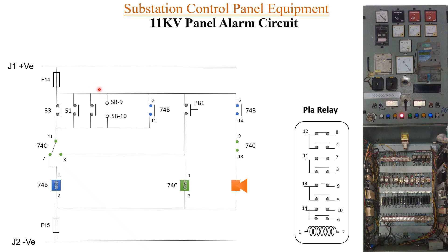Now let us see the animation for this alarm circuit. The relay will first get operated, due to which one of the contacts will be closed. When the relay is operated, you can see one contact will be closed — contact 51. Because of this, the coil 74B will be energized. And once this coil is energized, its both contacts will be operated. As the coil is energized, the self-latching contact has closed so it will continue to be energized.